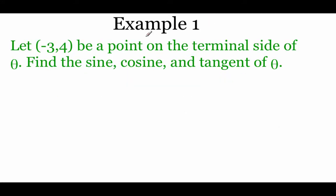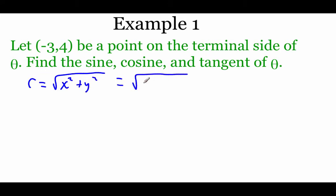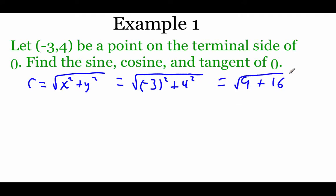In example 1, the ordered pair negative 3, 4 is a point on the terminal side of angle theta. We need to find r first: square root of x squared plus y squared, so square root of negative 3 squared plus 4 squared, which is square root of 9 plus 16, giving us the square root of 25, which is 5.